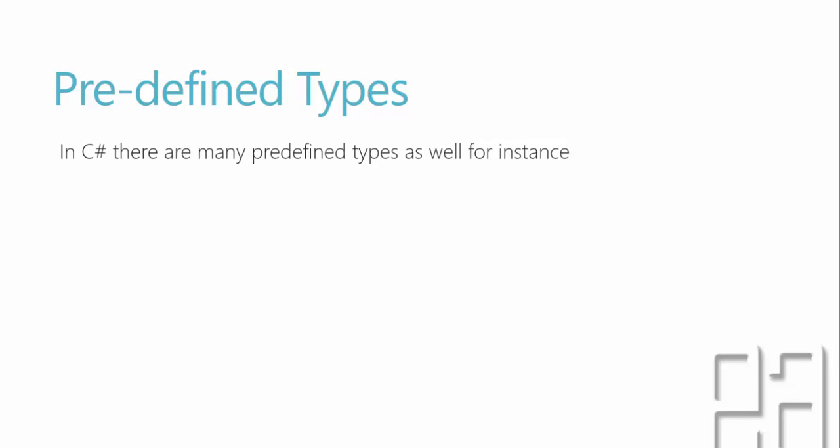There are also some predefined types available in C-Sharp, which you might have already known if you have worked with other automation testing tools like QTP or TestComplete, where we also use data types such as int and string. Here we also have some other data types like booleans and double, but we're not going to talk about all of these predefined data types right now — just to give you an understanding of what types in C-Sharp are.